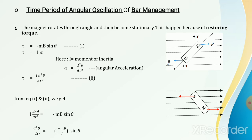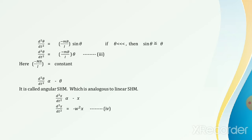Now look at equation 1 and equation 2. The left-hand side of both equations is torque, so we can equate the right-hand sides. Then we get: I · d²θ/dt² = −mB sinθ. Shifting I to the other side, we get d²θ/dt² = −(mB/I) sinθ.